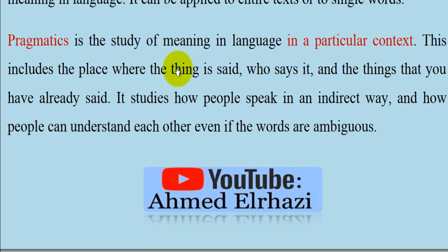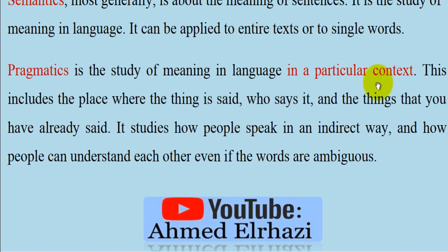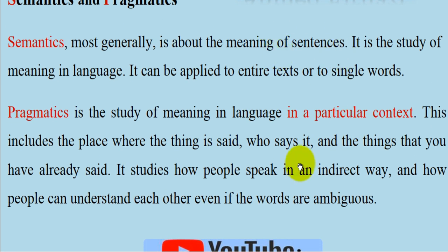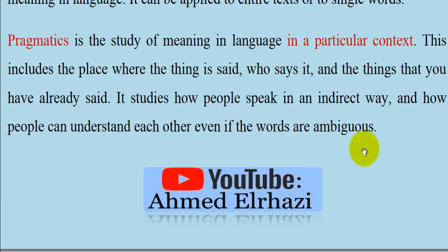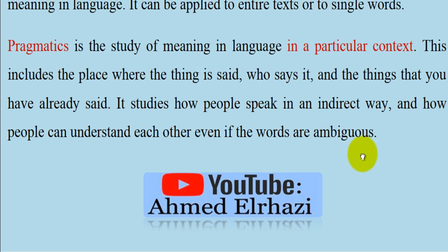Pragmatics is the study of meaning in language in a particular context — meaning in a particular context, as opposed to meaning of sentences in general. This includes the place where something is said and what has already been said. It studies how people speak in an indirect way, and how people can understand each other even if the words are ambiguous.